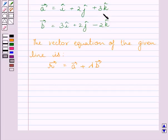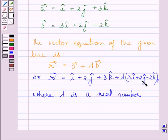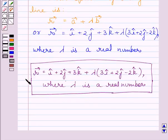Substituting these components for vector a and vector b in this equation, we get r vector equals i plus 2j plus 3k plus lambda multiplied by (3i plus 2j minus 2k). In this equation lambda is a real number. So this is our required equation.